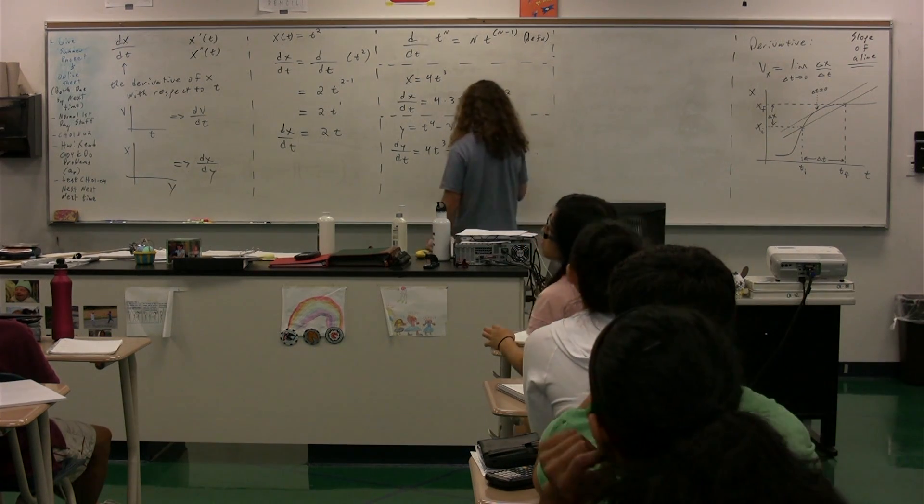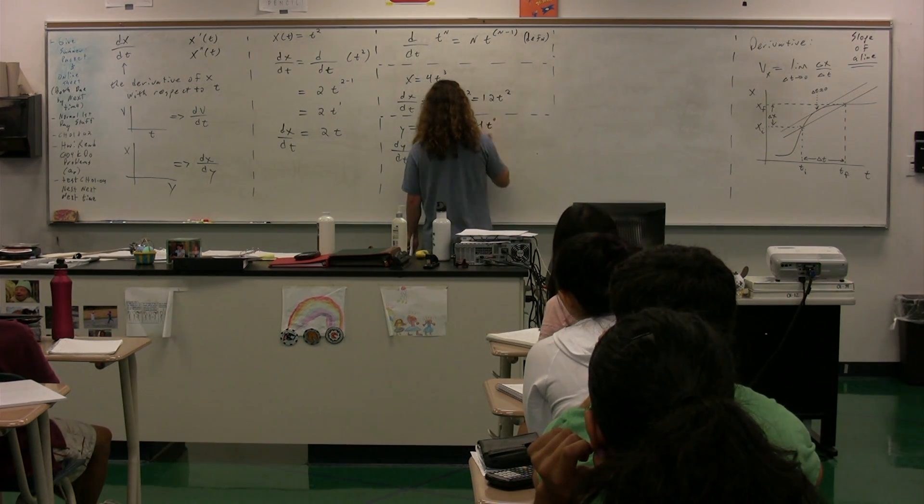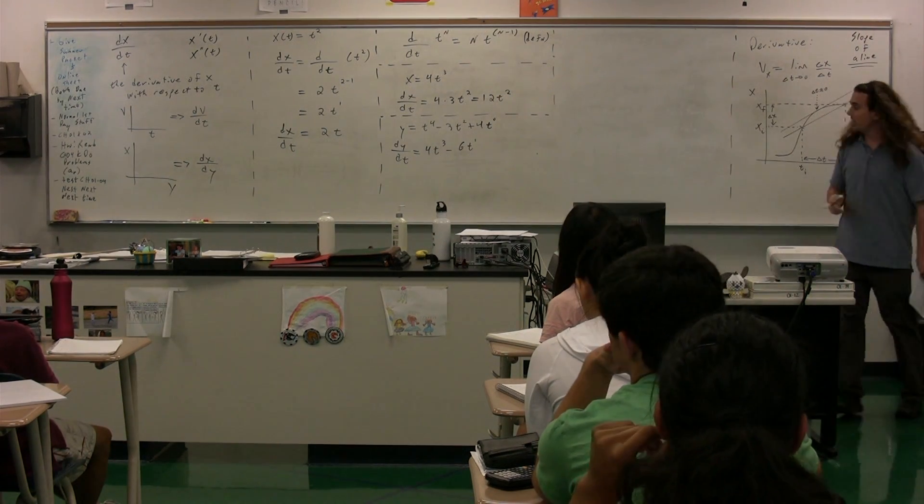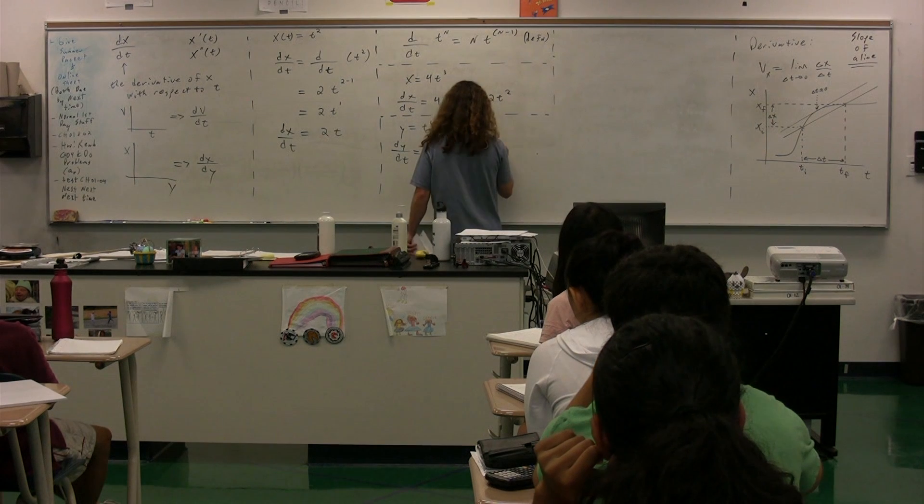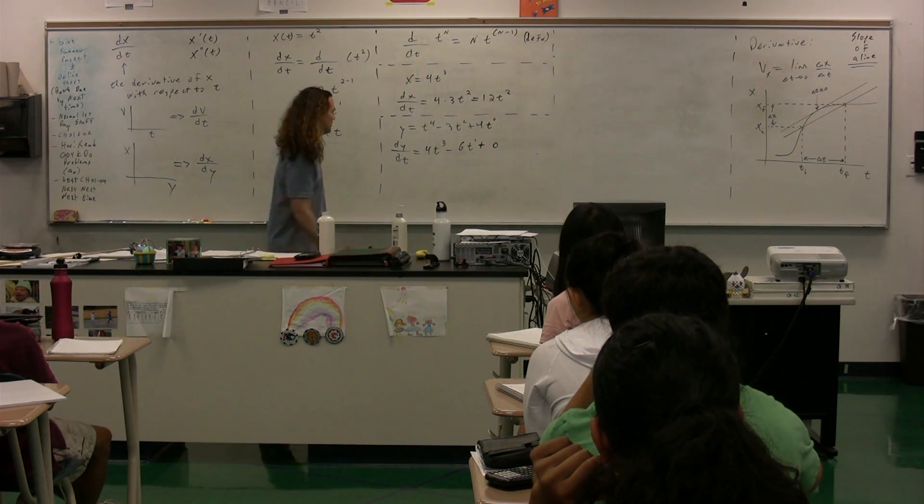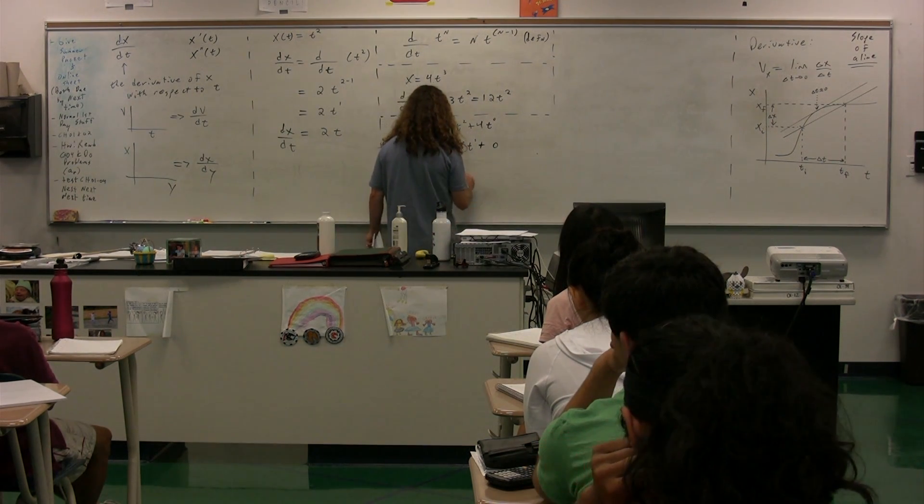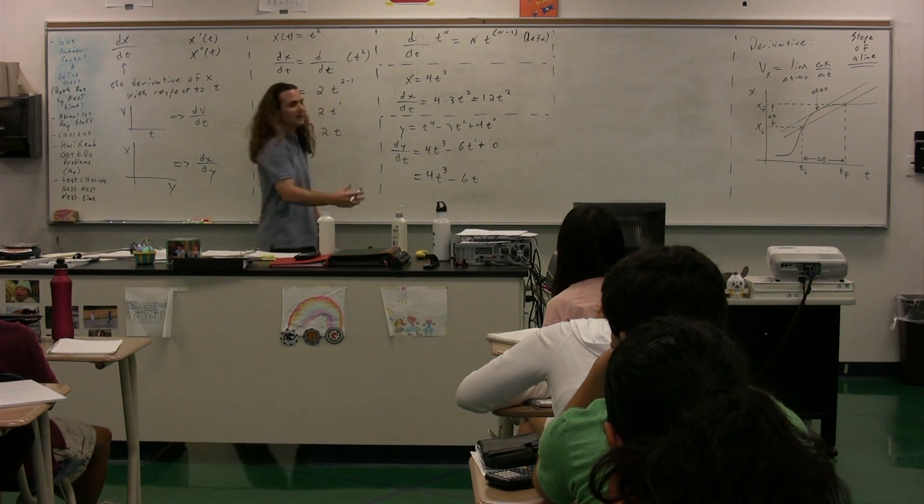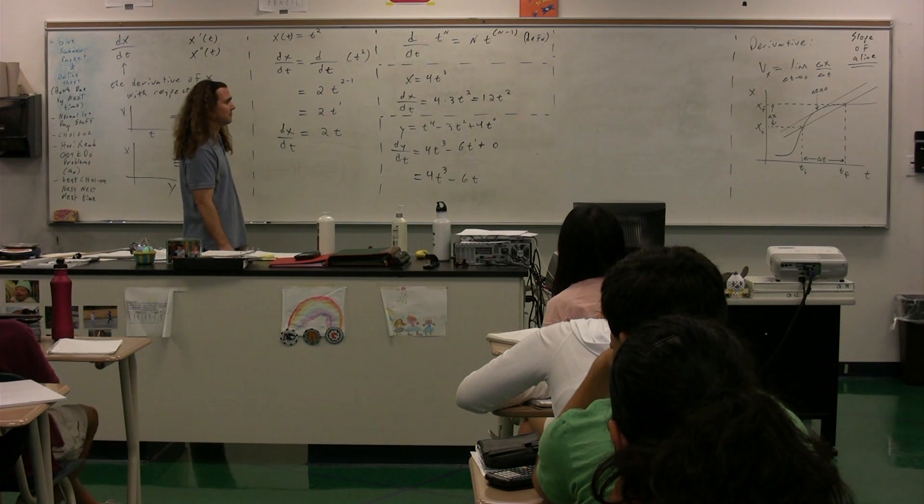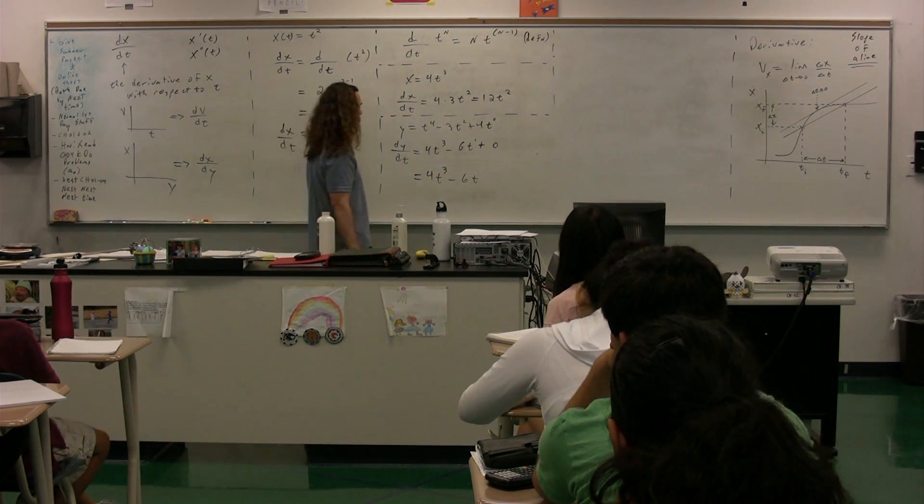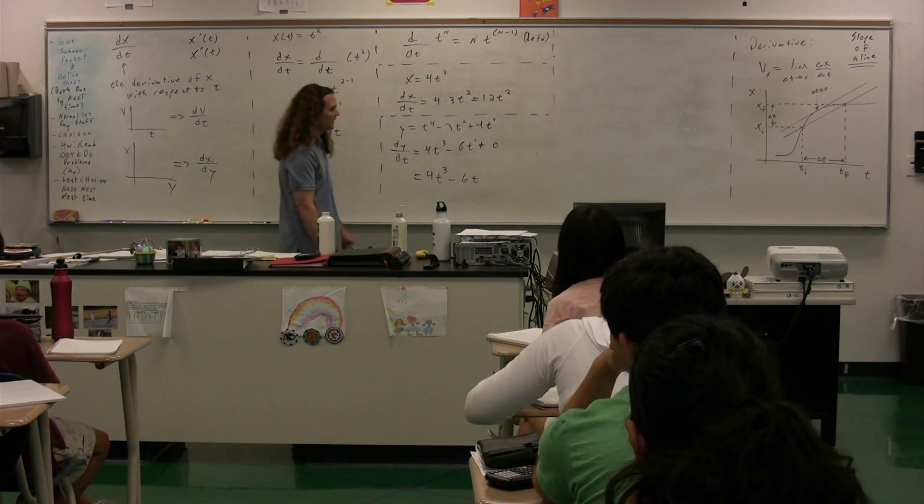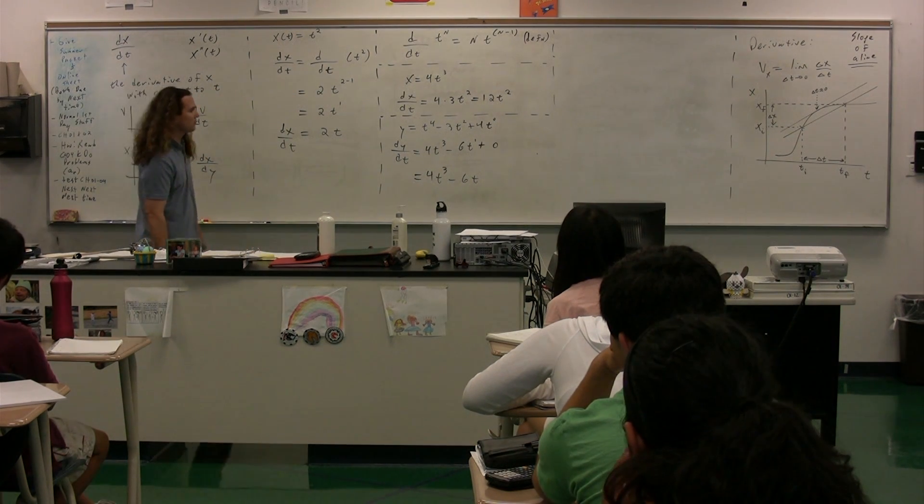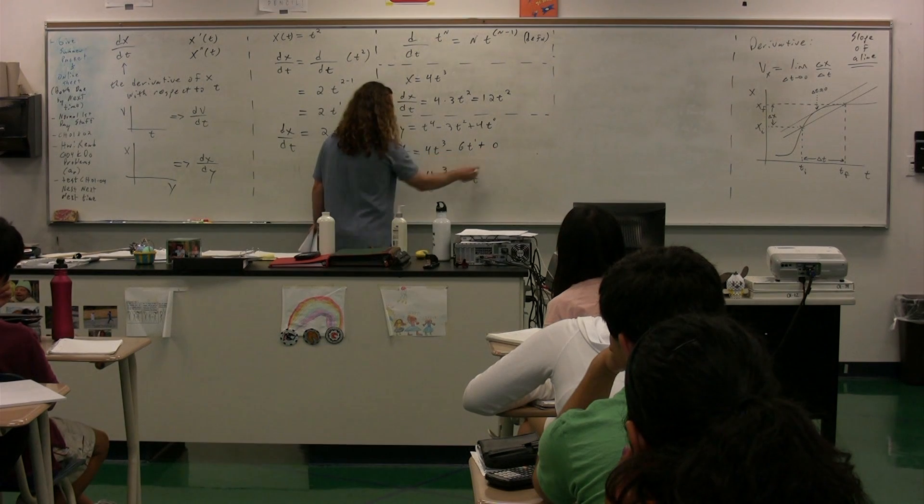Notice, so the way we're going to make sure people understand this is this is t to the zeroth power. Right. t to the zeroth power is just 1. So if we multiply by 0, it's going to be 0. So this ends up being 4t cubed minus 6t because if you multiply by 0, it's just going to be 0. If you think about it, the slope of any line is just going to be, is not changing. So the slope is going to be constant.